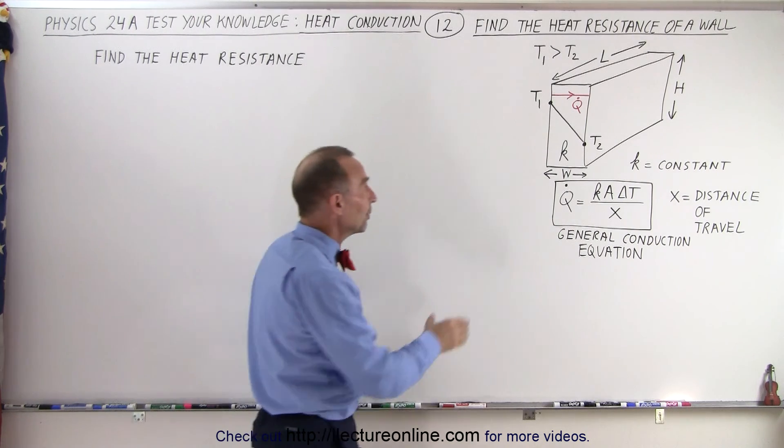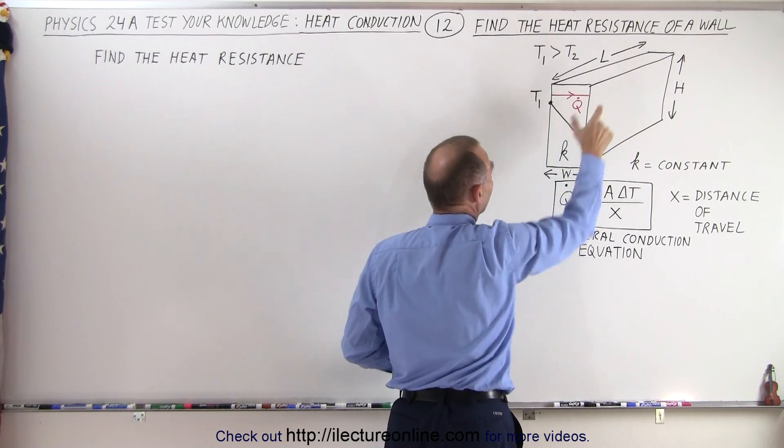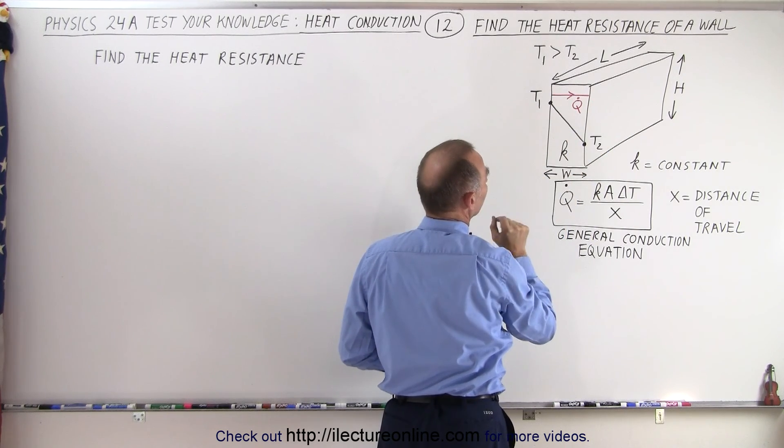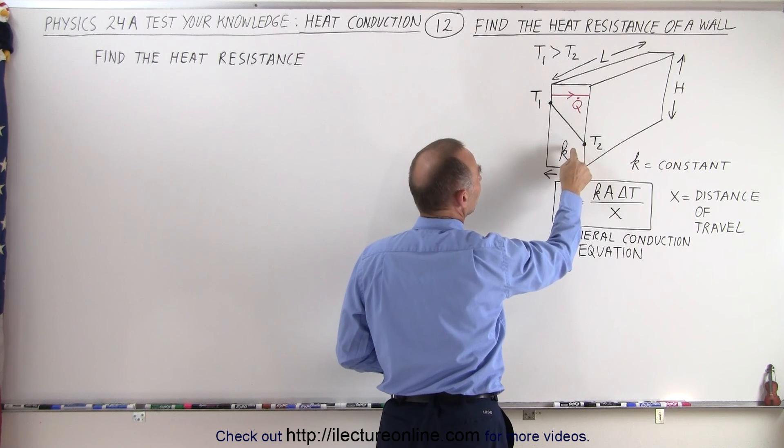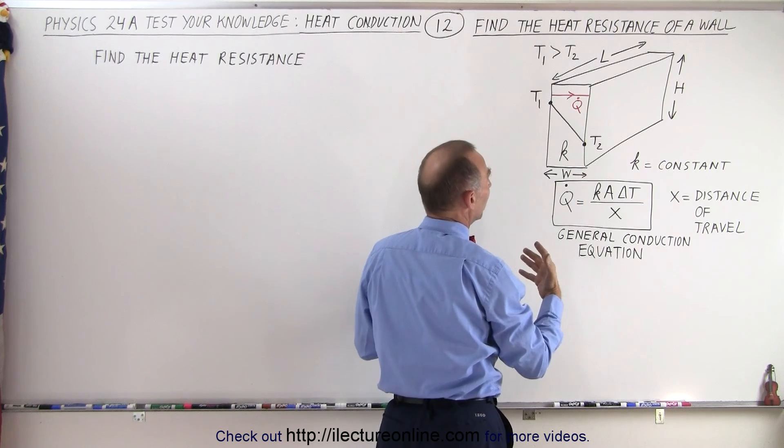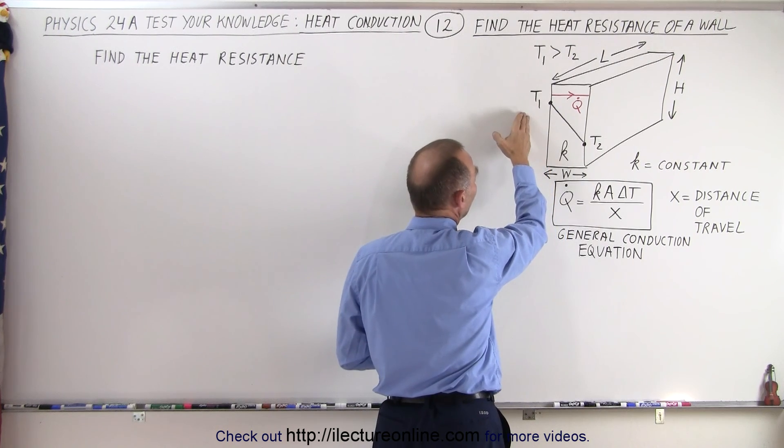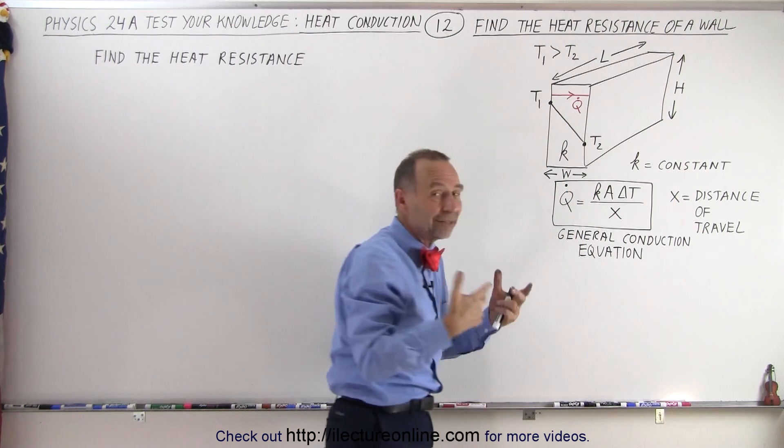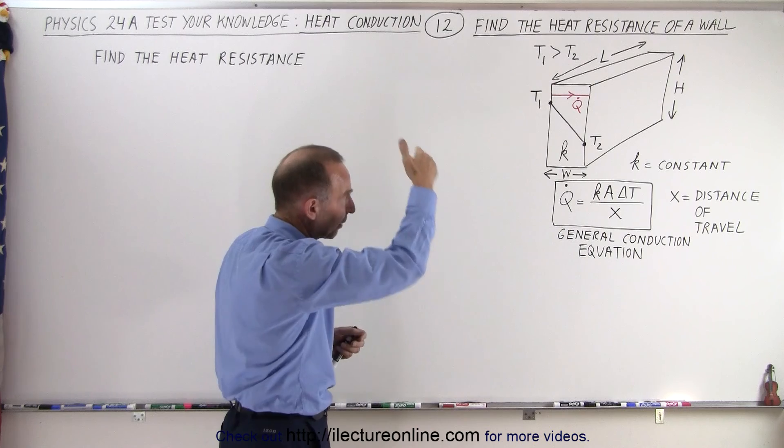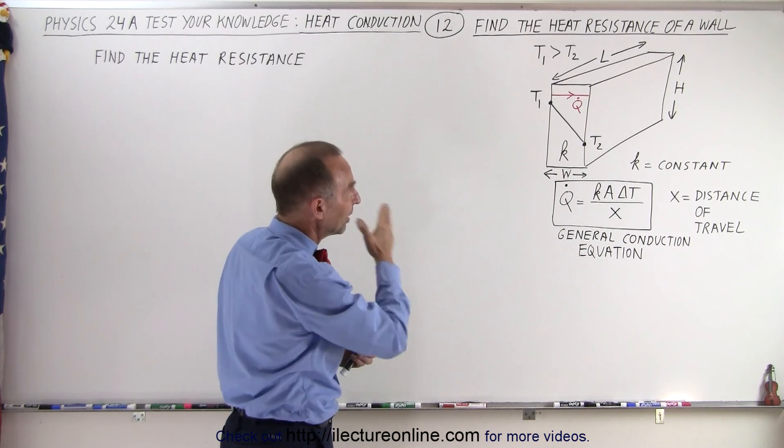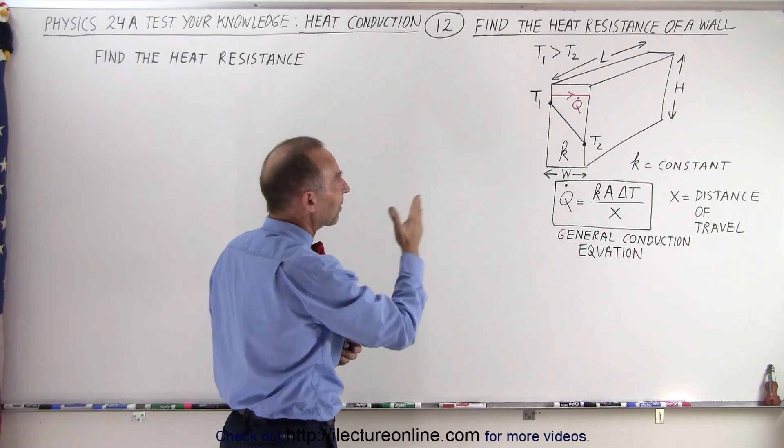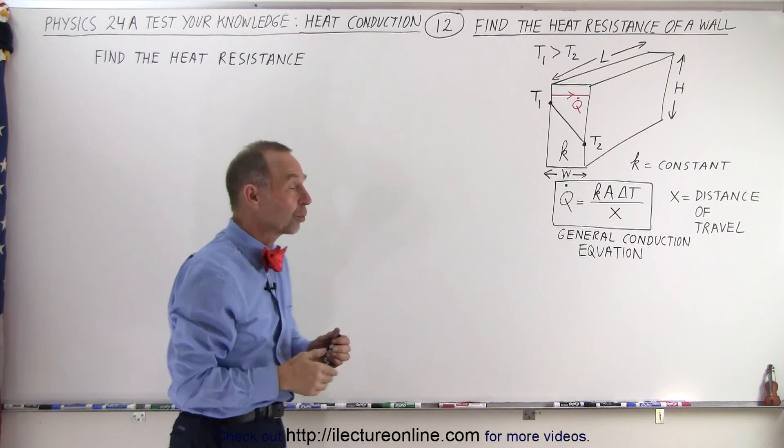Now here we can see we have a wall, a height h, length l, thickness w. It has the constant heat conductivity coefficient. Notice that the temperature on the left side is higher than the temperature on the right side, and we've graphically indicated that by that sloped line. We can see that the heat will travel from the left side to the right side, from the higher to the lower temperature.